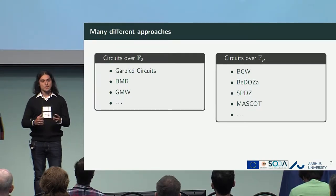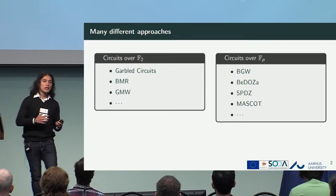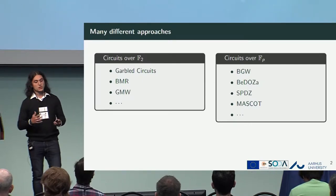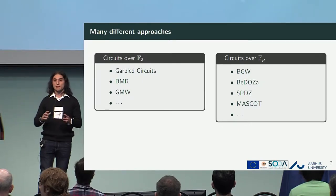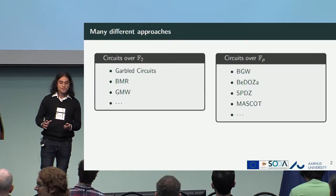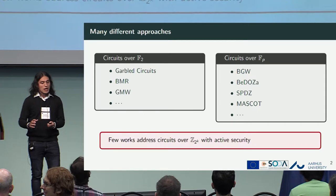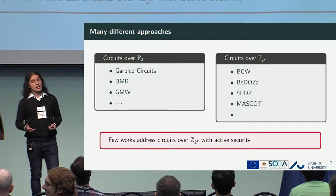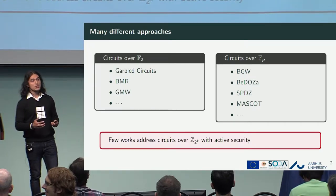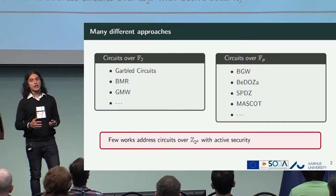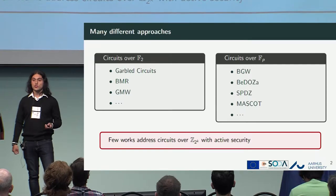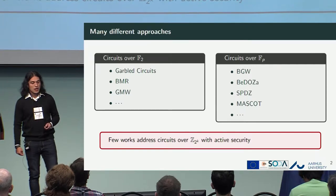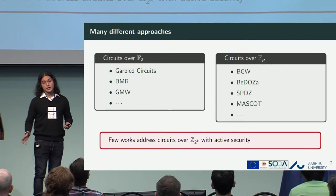Fields have very nice properties when it comes to invertible elements and properties about random elements. But few works actually address the case of computation over a ring like Z_{2^k} — the integers modulo 2 to the k — with active security.